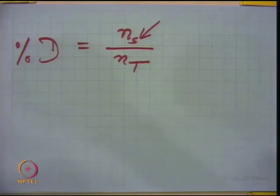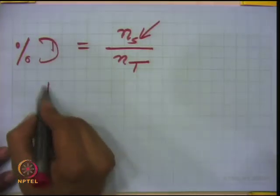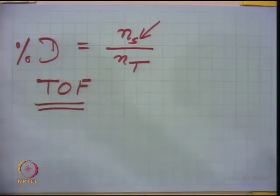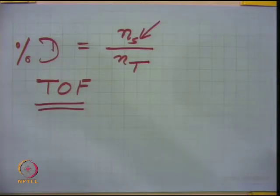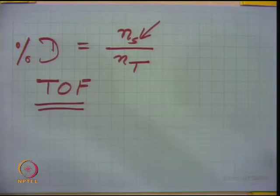This technique is a titration method. Chemisorption is very specific for temperature, so you have to do it at different conditions of temperature. That can be used to define a turnover frequency, which is a very important property for catalyst characterization. The number of active sites can be related to the number of molecules of the reactive gas chemisorbed per unit time and per unit active site, since once dispersion is known, number of sites are known.